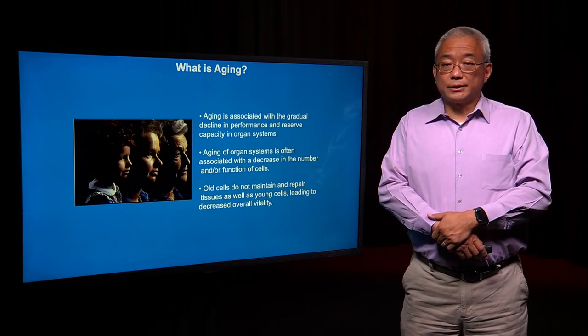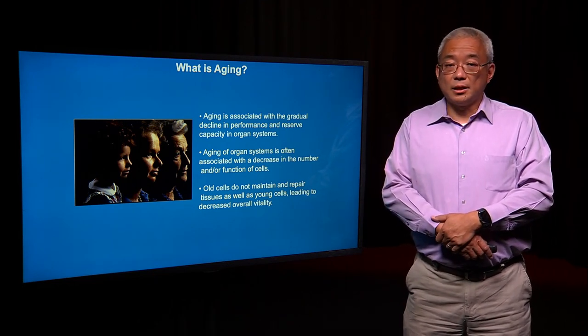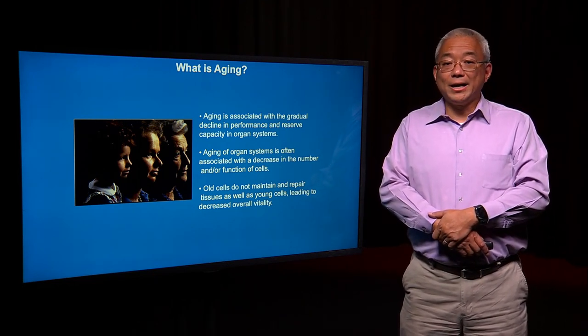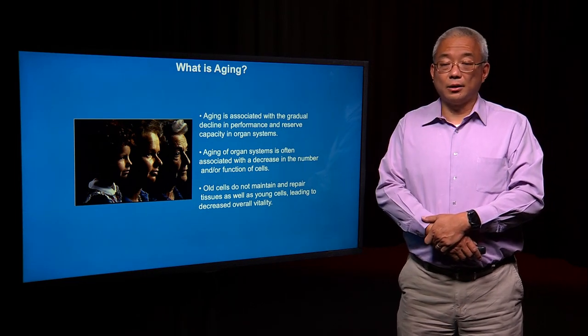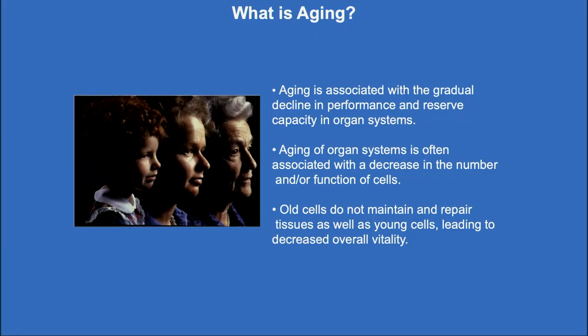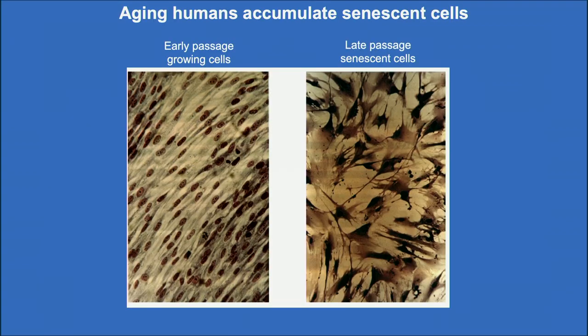My interest is in the area of aging research. Why do we age? This is a question that has fascinated the human species for centuries, and we know that as we age our organ systems fail. But is there a biological determinant of why we age? It turns out that the accumulation of old cells, or senescent cells, is one of the main determinants of why we age.